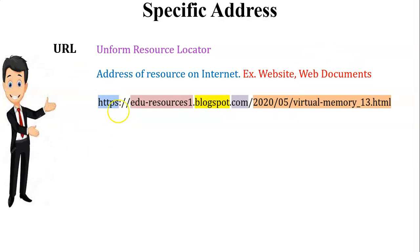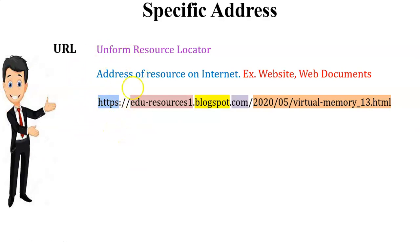A URL always starts with HTTP or HTTPS. HTTPS is one kind of protocol. Using the HTTPS protocol we can access websites and web documents on the internet. So the first part of a URL is the HTTPS protocol.